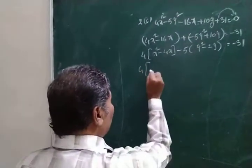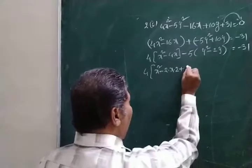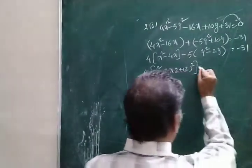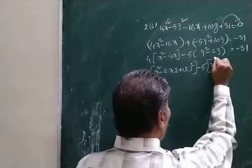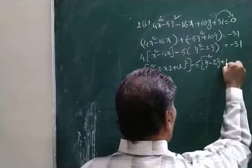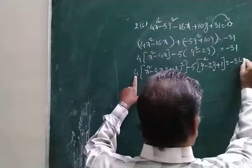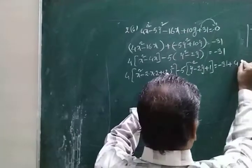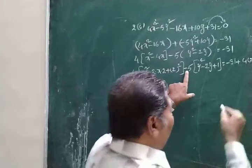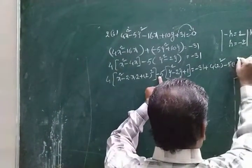Complete the square: 4 into x squared minus 4x, using 2x into 2. Add the b squared value. Minus 5 into y squared minus 2y plus 1 equals minus 31, plus 4 into 2 squared, minus 5 into 1 squared.